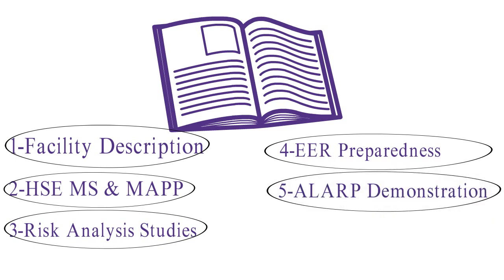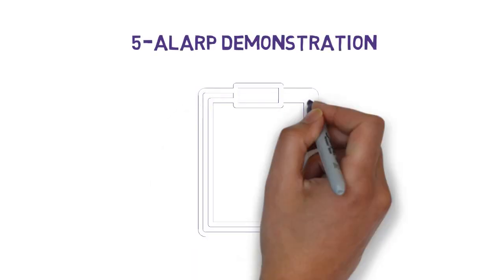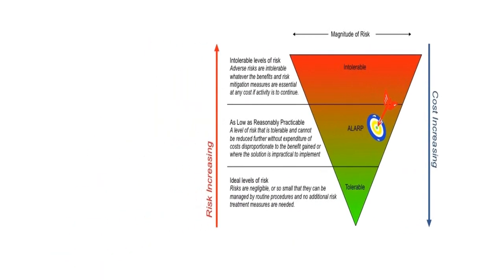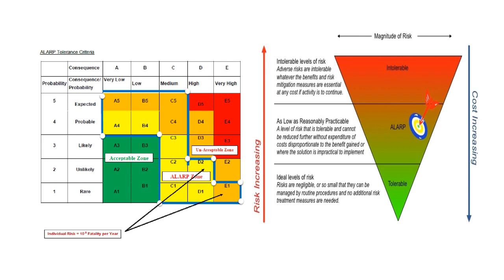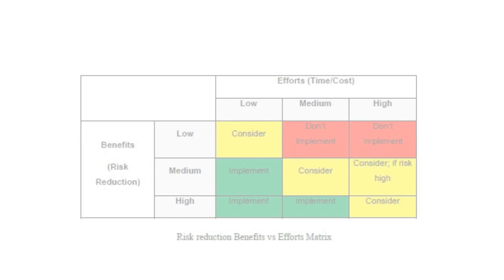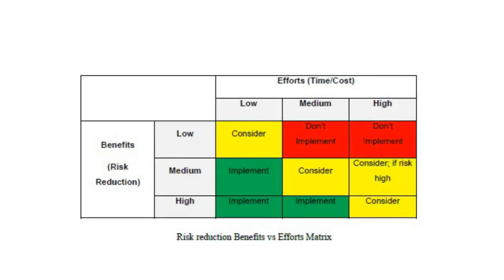The last part is ALARP Demonstration. In this part, the company demonstrates that it has taken all applicable risk reduction measures to the ALARP level. To achieve that, the company describes the criteria it followed to demonstrate ALARP. This happens through analyzing all results from the risk and safety studies and listing all recommendations that came out from those studies with zero status.